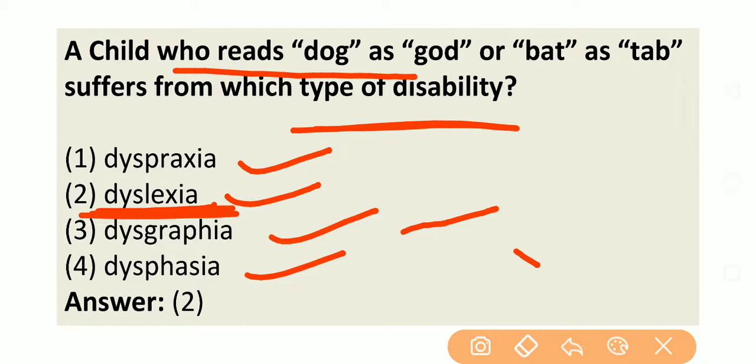We should also know the next two terms. Dysgraphia is a learning disability that affects writing abilities — difficulty in spelling, poor handwriting, and trouble putting thoughts on paper. Dysphasia is a language or speech disorder involving impairment of the power of expression by speech, writing, or signs, or impairment of the powers of comprehension of spoken or written language.